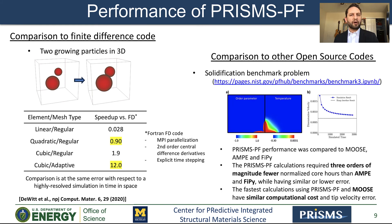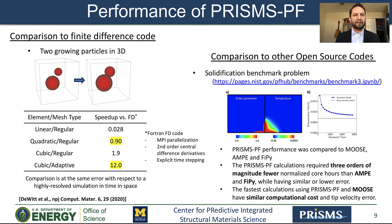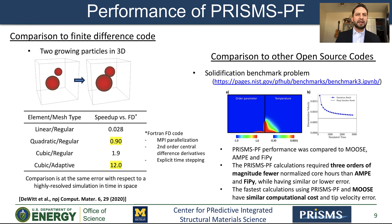Regarding other open source codes, we compared the performance between PRISMS-PF, Moose, FiPy, and AMPE for a 2D simulation of solidification in a pure material. This is one of the benchmark problems developed at the PFHub community. In summary, we found that PRISMS-PF calculations required three orders of magnitude or fewer of normalized core hours than AMPE and FiPy, while having similar or lower degree of error. The fastest calculations used in PRISMS-PF and Moose have similar computational cost and tip velocity error. For this comparison, we only included results uploaded by expert level users. In conclusion, we are confident that PRISMS-PF is competitive in terms of performance.